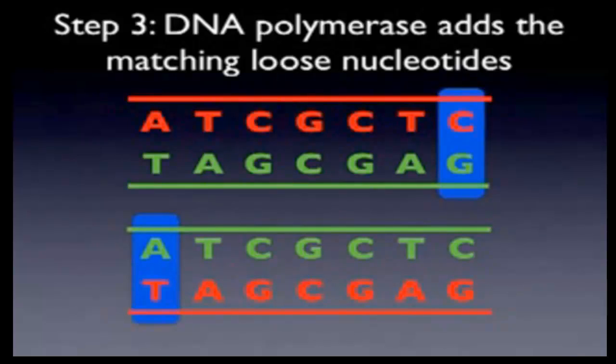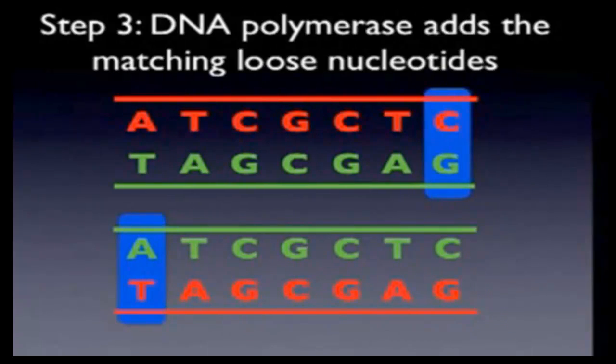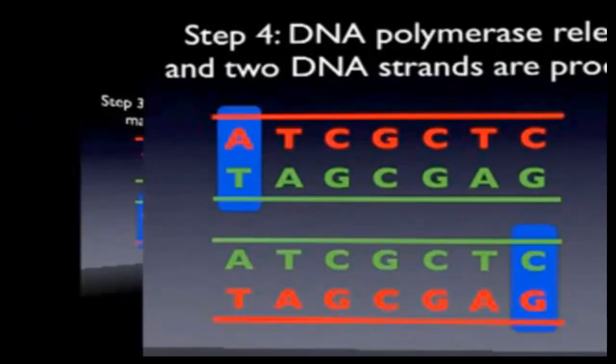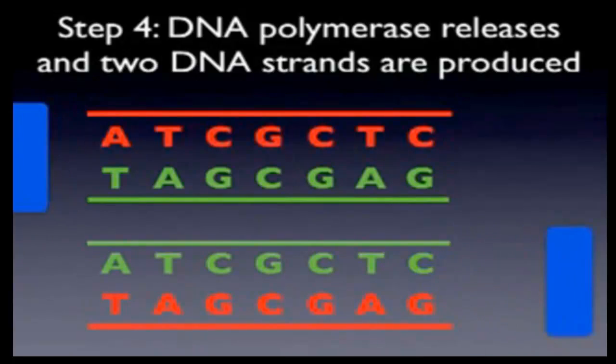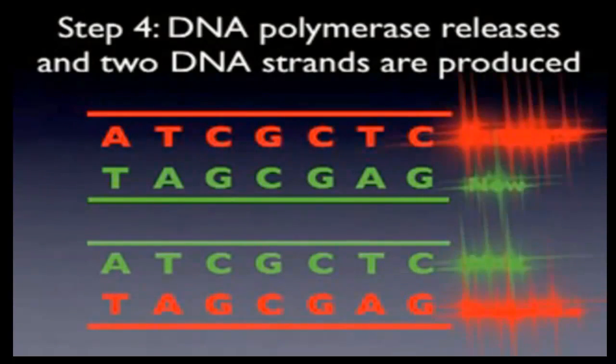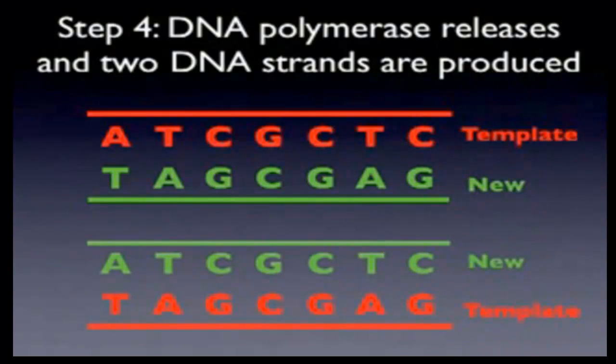Now we have two new strands from that original one strand. We have our template, which helped us produce new strands. From one we now have two — that's how DNA replication happens in a nutshell.